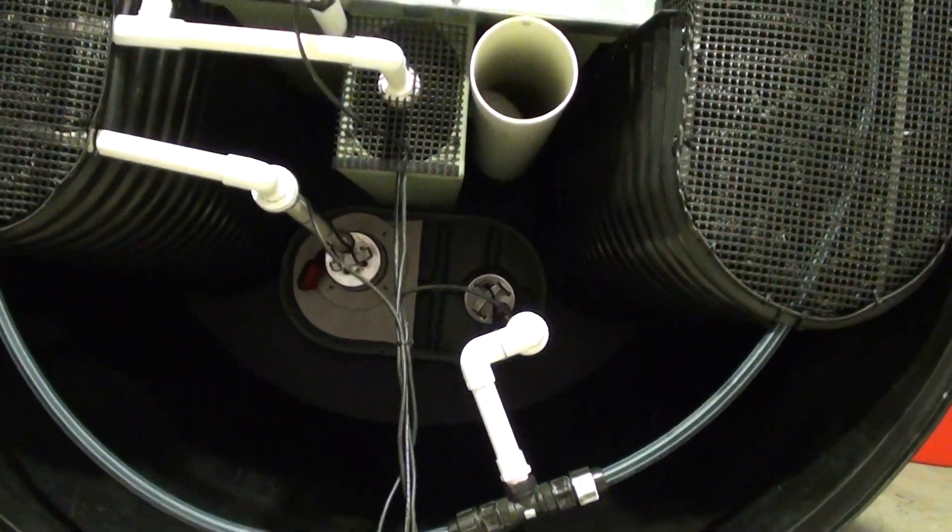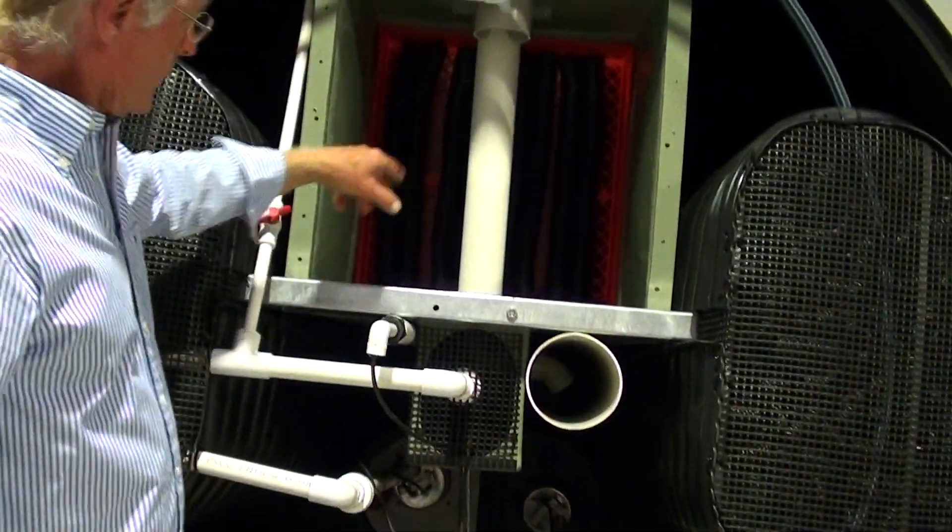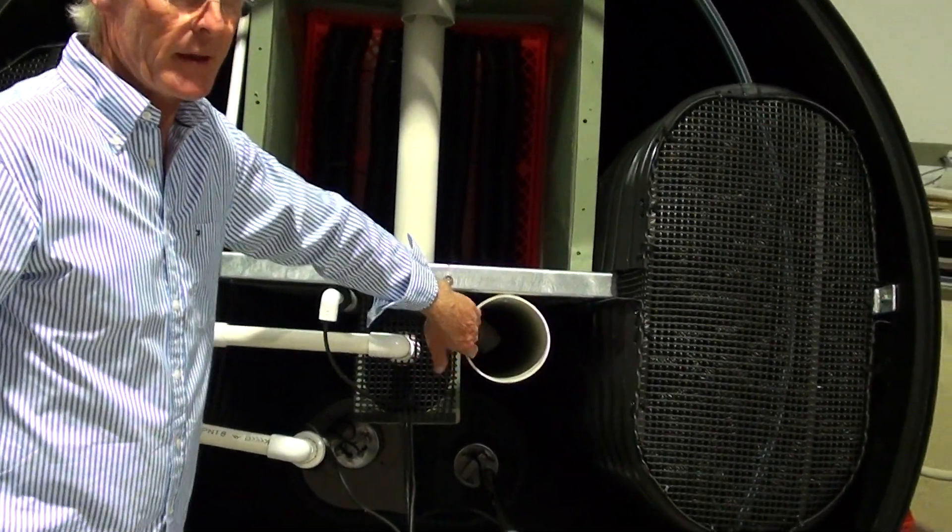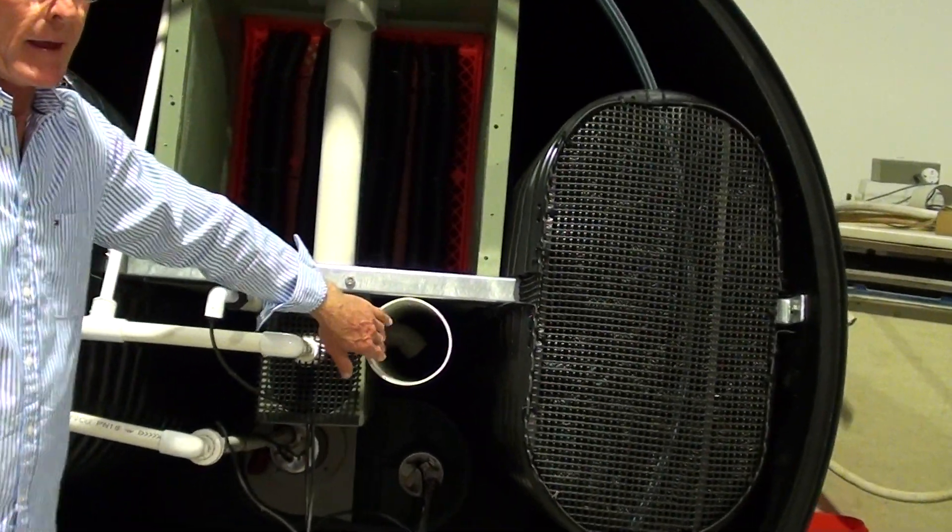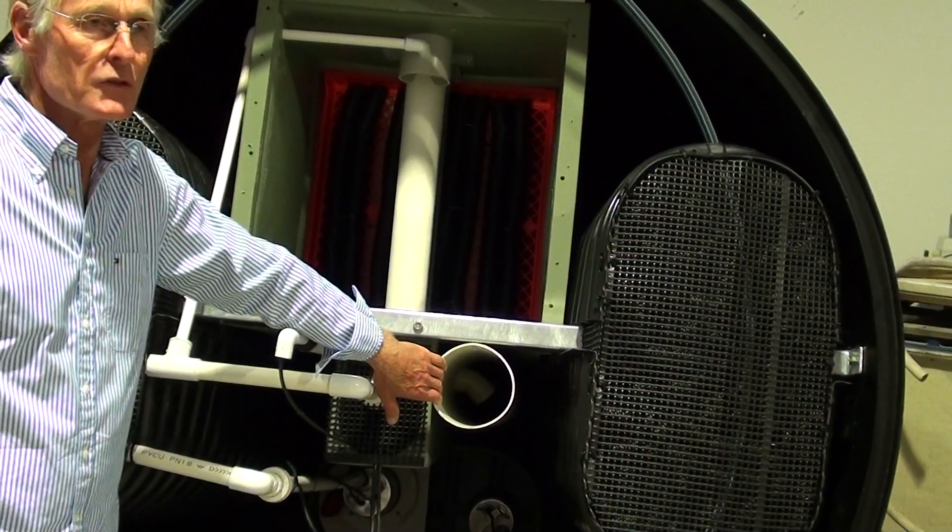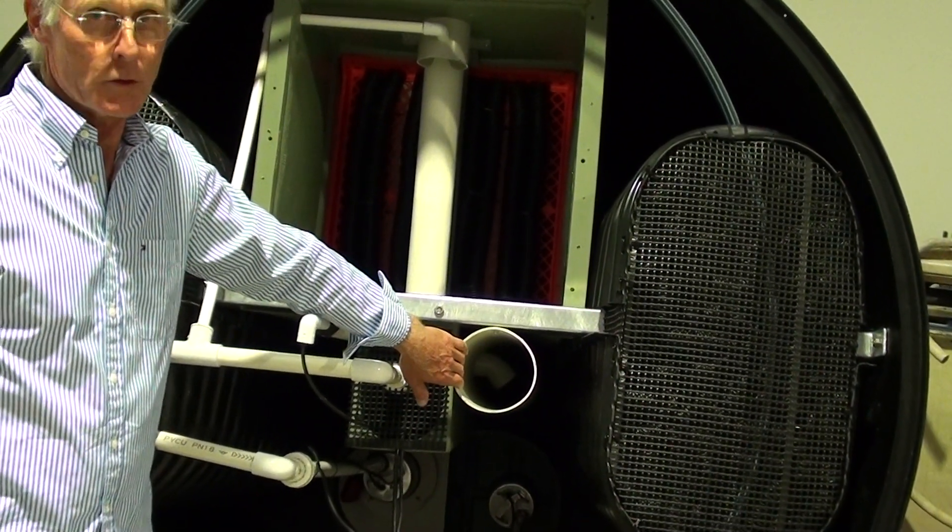One thing I didn't mention was when the liquid comes into the main body of the tank it is filtered in this area here. So we take hair and lint out in that department and it can be removed on servicing through the main lid of the unit.